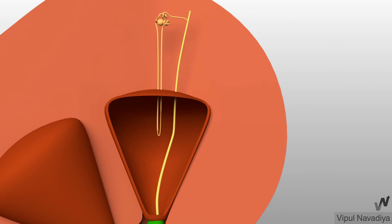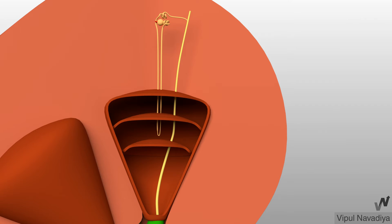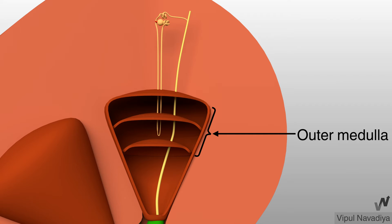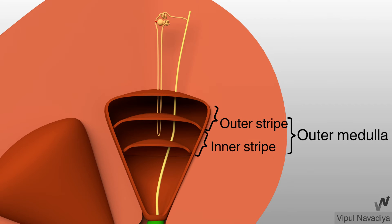Now we will see different parts of the tubule. But before that, let's recall the subdivisions of the medulla, as they are vital in understanding the divisions of renal tubule. This is the outer medulla, with its outer stripe and inner stripe. And this is the inner medulla.